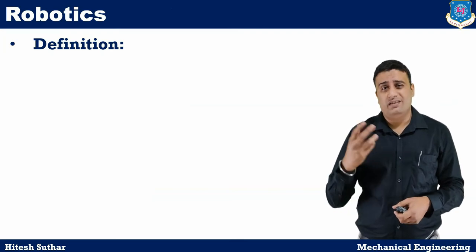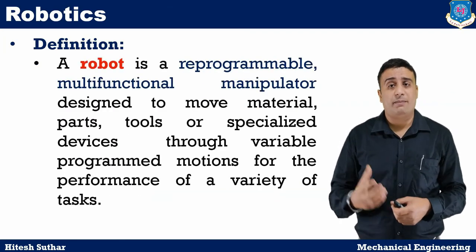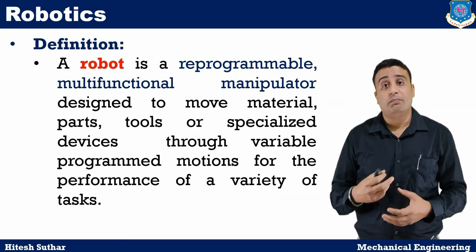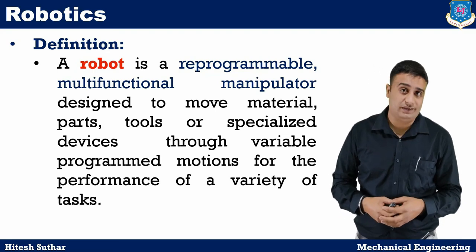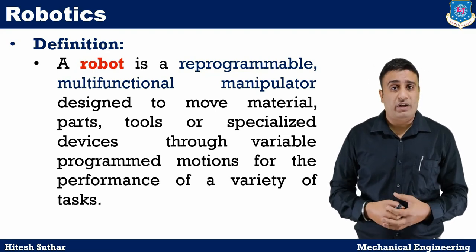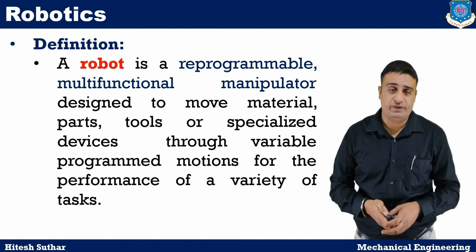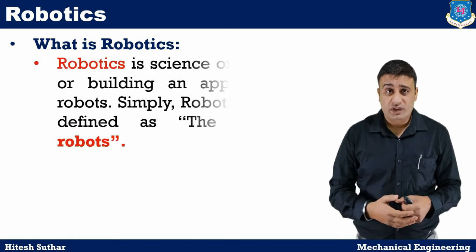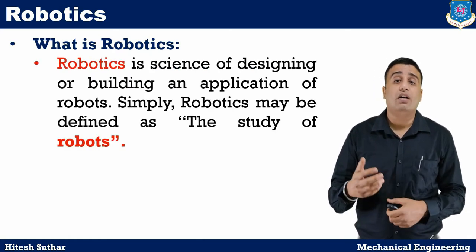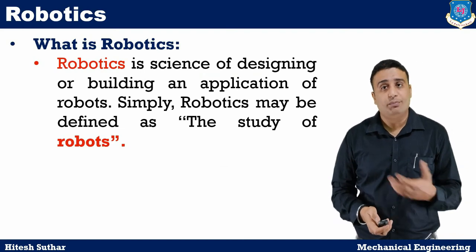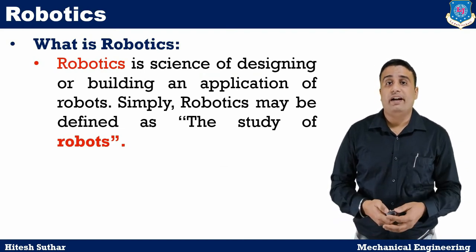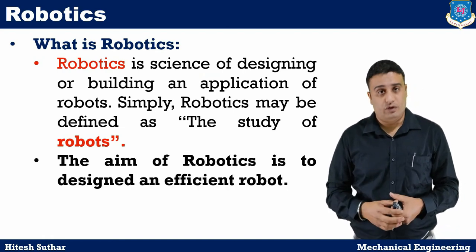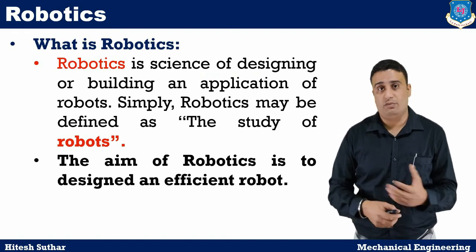A robot, as we hear many times, is a reprogrammable multifunctional manipulator designed to move material, parts, tools or specialized devices through variable program motions for the performance of a variety of tasks. Robotics is the science of designing or building an application of robots. Simply, robotics may be defined as the study of robots. The aim of robotics is to design an efficient robot. So this is the basic difference between robot and robotics.